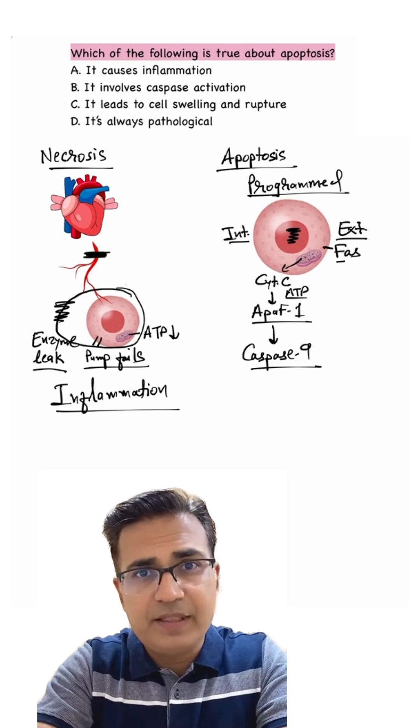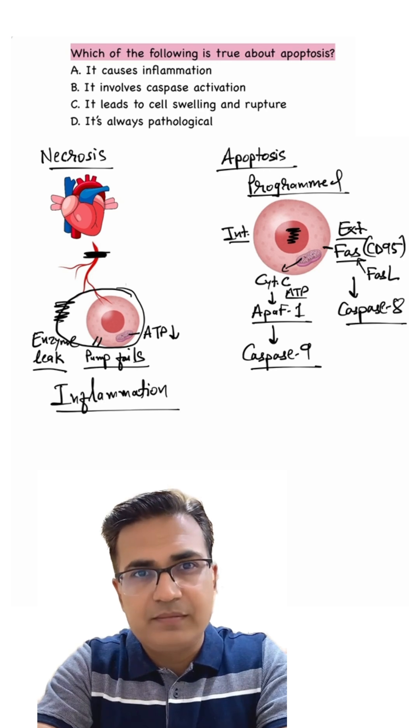In the extrinsic pathway, FAS receptor, which is CD95, activation by FAS ligand ultimately activates caspase 8. Both caspase 8 and 9 activate executioner caspases.